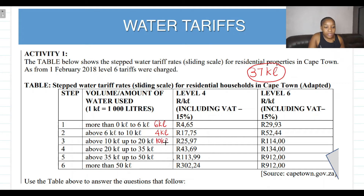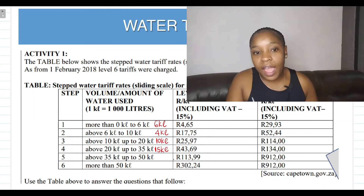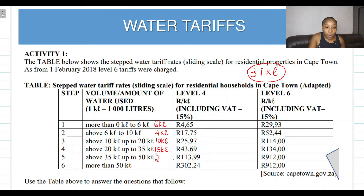Then 20 minus 10 is 10 kiloliters of water, so now we've got 20 kiloliters. Next, 35 minus 20 gives us 15 kiloliters of water. So 6 plus 4 plus 10 plus 15 gives us 35 kiloliters. We need 2 more kiloliters to reach 37, so in the fifth step we just need 2 kiloliters of water.